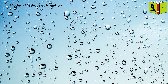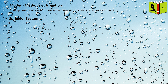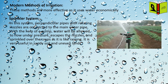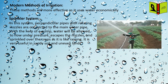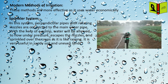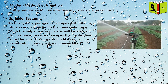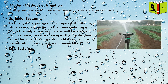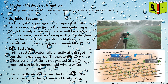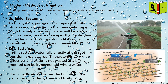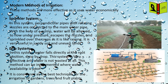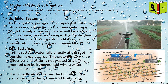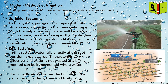Modern Methods of Irrigation. These methods are more effective as they use water economically. Sprinkler System: In this system, perpendicular pipes with rotating nozzles are connected to the main water pipe. With the help of a pump, water flows under pressure, escapes the nozzles, and is sprinkled over the crops like rain. It is very useful in sandy soil and uneven lands. Drip System: In this system, water falls directly at the root position, drop by drop. This system is very effective and water is not wasted at all. This method can be implemented where water availability is poor. It is considered the best technique for irrigation of gardens, trees, and fruit plants.